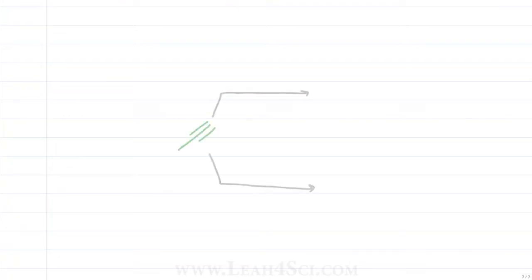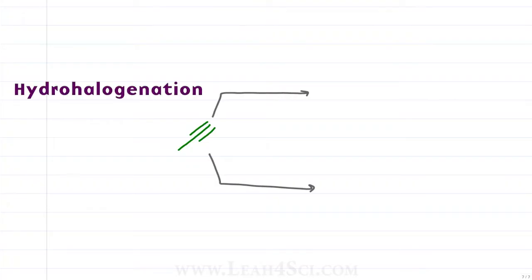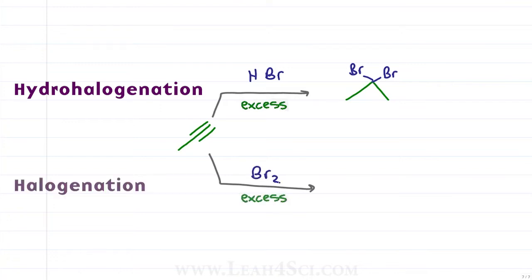When adding halogens to an alkyne, the halogens will continue to add, so you show the reagent in excess. For hydrohalogenation we add excess HX — such as HBr — to break both pi bonds and have two bromines added at the more substituted or Markovnikov position. If we use X2 for halogenation, both pi bonds break and we add four halogens — two to each carbon that used to have a triple bond.